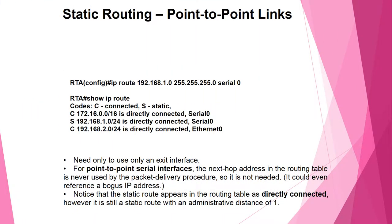Using 'show ip route', we can see routes listed as connected or static. Point-to-point links such as 0.168 are directly connected. For point-to-point single interfaces, the next-hop address in the routing table is never used by the IP packet delivery procedure, so it is not needed. It could even reference a bogus IP address. A static route appears in the routing table similar to a connected route but is still a static route with an administrative distance of 1.